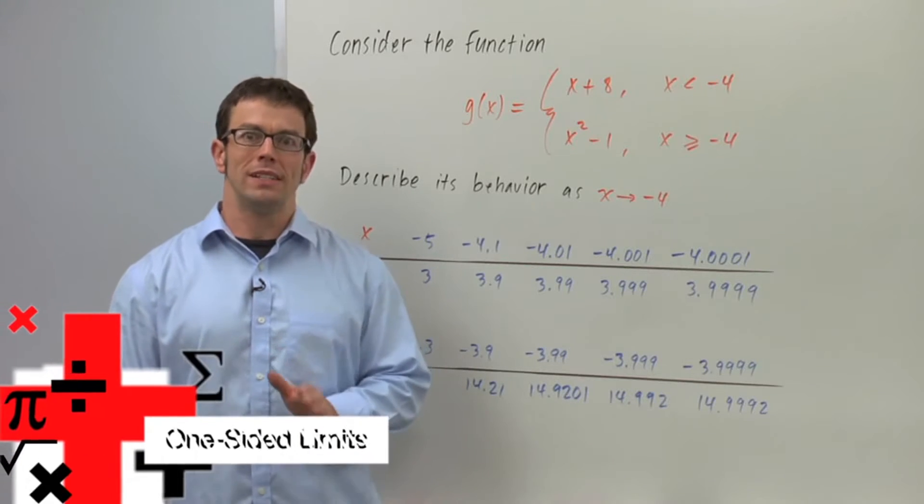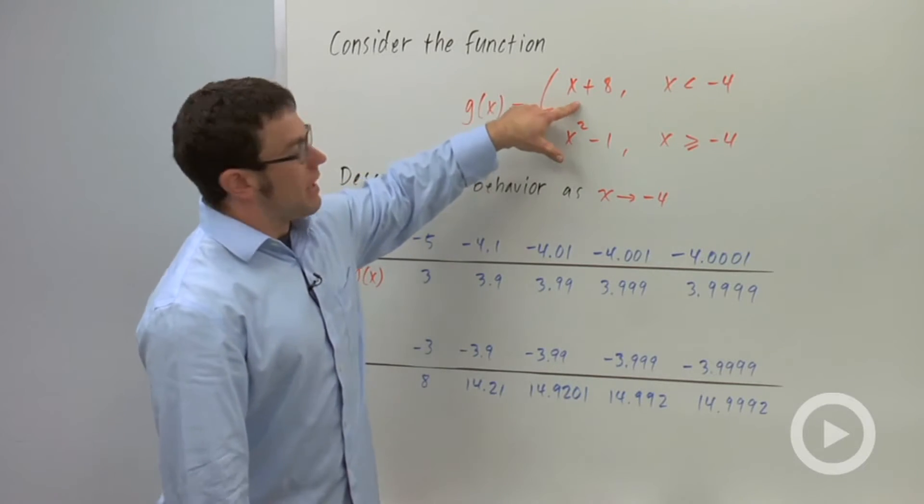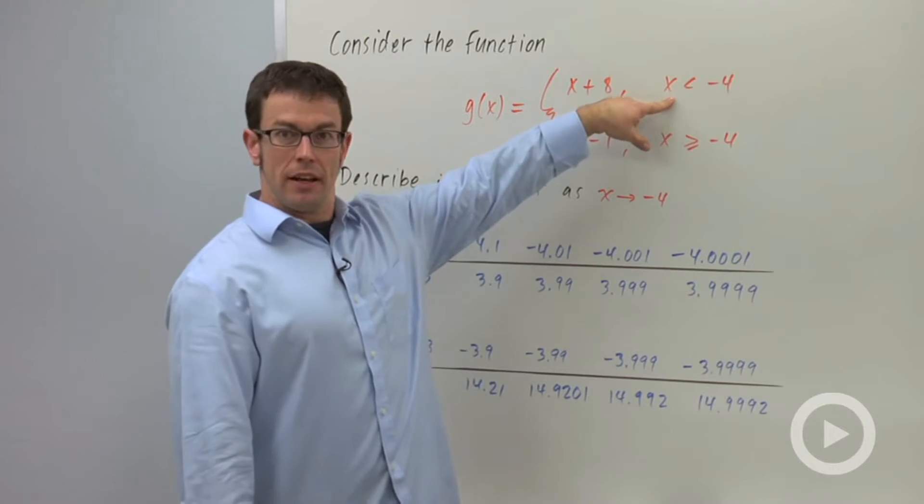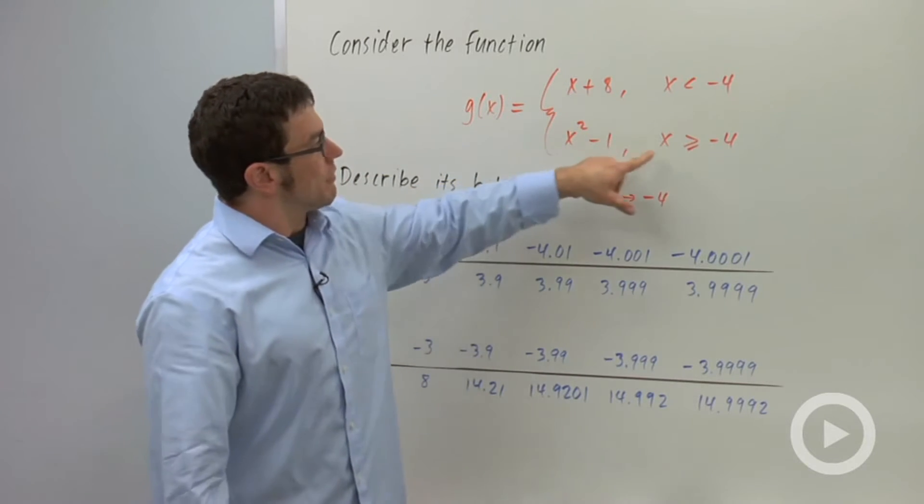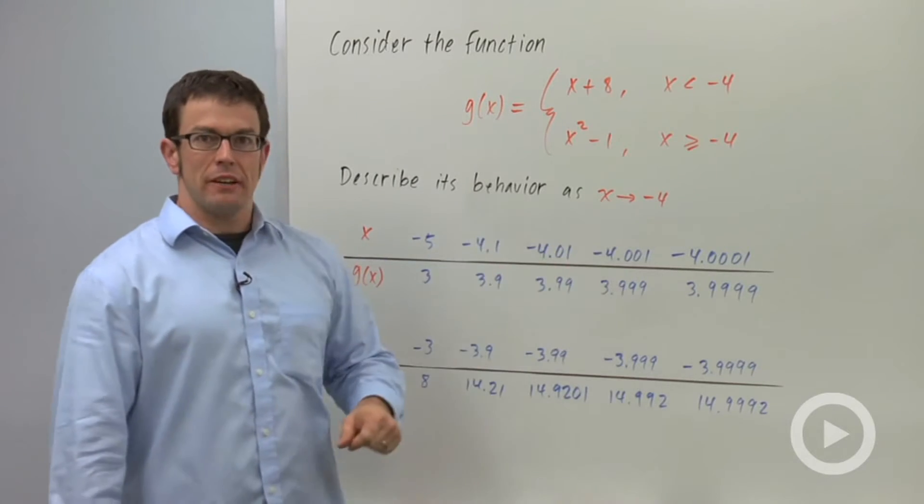I want to talk about one-sided limits. Here's a function, g of x, and it's piecewise defined: x plus 8 for x less than negative 4, and x squared minus 1 for x greater than or equal to negative 4. Describe its behavior as x approaches negative 4.